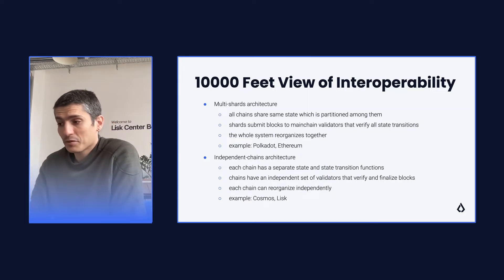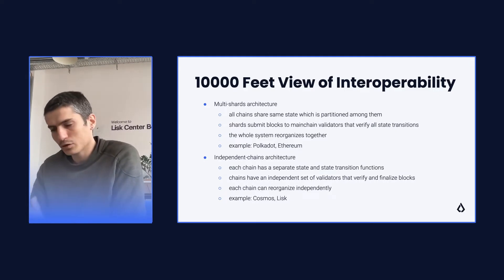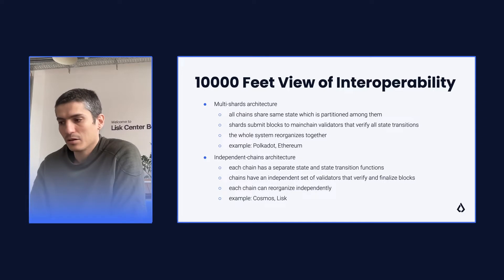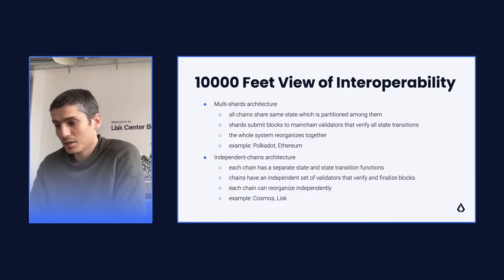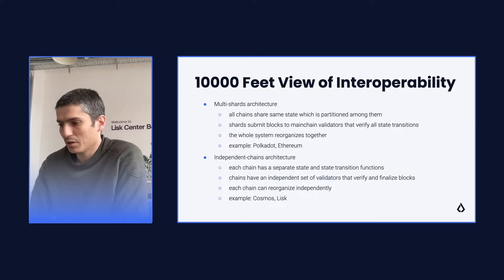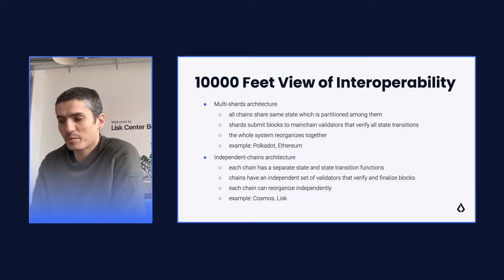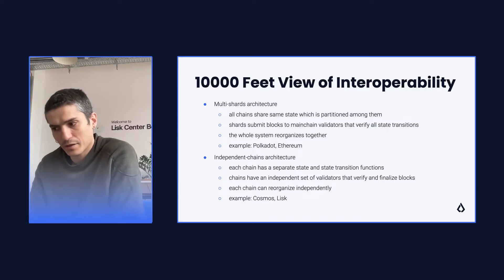Let's start with a 10,000 feet overview of interoperability. Among other solutions, two notable ones are multishards architecture and independent chains architecture. Here I don't want to focus on the details which may differ between each particular instance of these solutions, but just look at the general features.